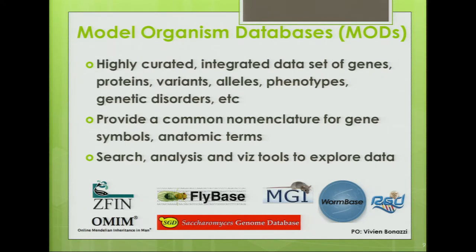I realize I'm suggesting OMIM is a model organism of human, but I guess we could see it that way. Collectively they all provide a common nomenclature for gene symbols and anatomic terms. They also provide methodologies for search, analysis, and visualization of their data. Historically most MODs have been focused on a particular organism, but increasingly we're looking at integration of these data sets because they form a mosaic for looking at the human genome and human disease.